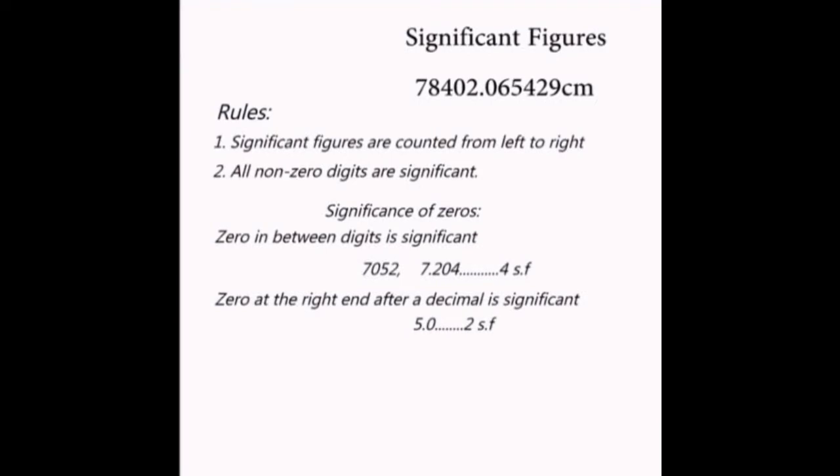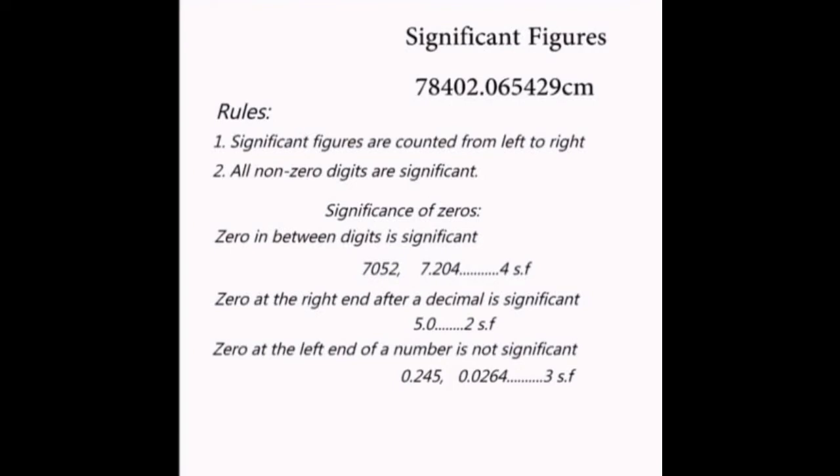When a zero occurs at the left end of a number, it is not significant. For example, 0.245 and 0.0264 have three significant figures, both of them.